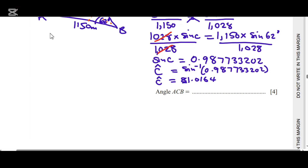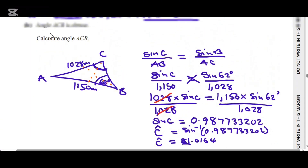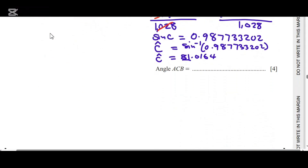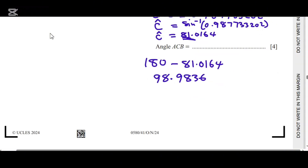When you look at 81 degrees, this is not an obtuse angle. An obtuse angle is between 90 and 180 degrees, but this one is less than 90. So to find the obtuse angle they are talking about, we say 180 − 81.0164 = 98.9836, which is approximately 99 degrees.